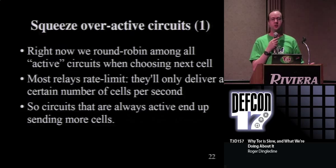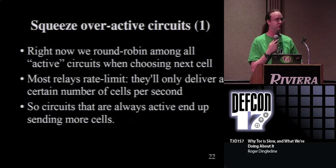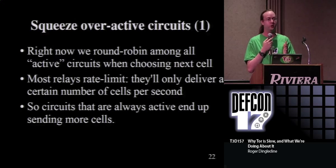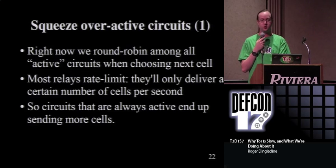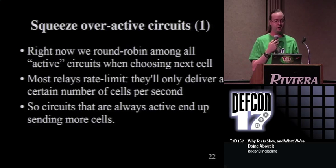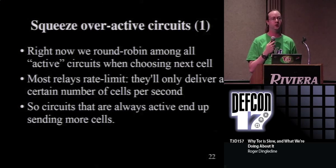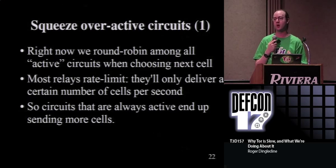The first approach is maybe we need to find circuits that are pushing a lot of cells and slow them down - you're talking too fast, I'm not going to let you talk that fast, because there are a lot of people talking more slowly and they should get priority. A lot of relays out there are rate limited, and they only deliver a certain number of cells per second. Right now with 5,000 circuits waiting to send bytes, the answer is we do a round robin - cycling through. That means circuits that are always active always have something to send and push out most of the cells, while the slow guys who don't have a cell waiting right now have to wait for the next second.